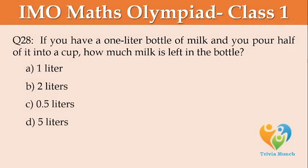If you have a 1 litre bottle of milk and you pour half of it into a cup, how much milk is left in the bottle? Option A: 1 liter, Option B: 2 liters, Option C: 0.5 litre, Option D: 5 litres.